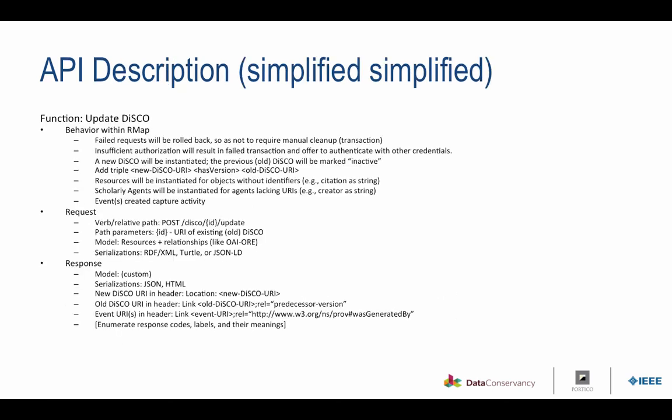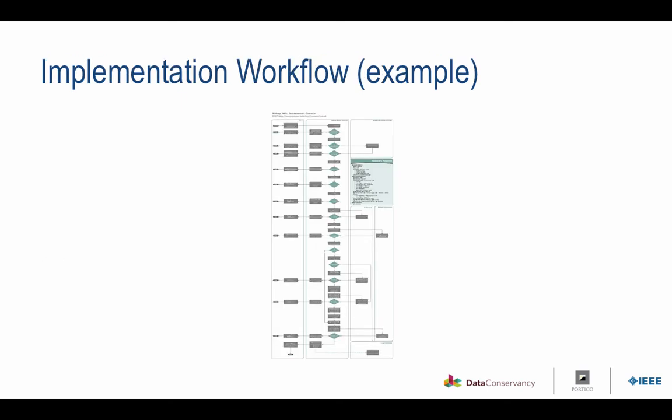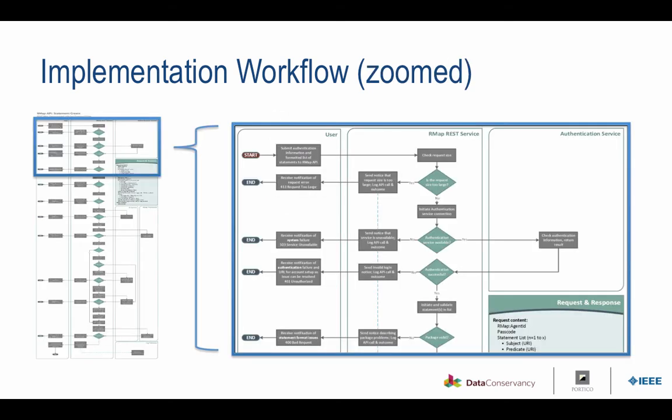This slide is an example showing some of the behaviors within a particular API — this one is updating the DISCO — articulating the behaviors themselves, what the requests look like and what the responses look like. And this is one of the implementation flowcharts developed for one of the API methods, presented in swim lanes. You can see there's quite a lot of work that goes into the specification of the implementations for these.